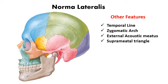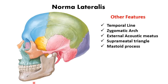Next, we have the suprameatal triangle, situated just posterior and superior to the external acoustic meatus. It is bounded in front by the posterior superior margin of the external acoustic meatus, above by the supramastoid crest, and behind by a vertical line drawn from the posterior margin of the external acoustic meatus, forming a triangle. The mastoid antrum lies deep to this triangle.